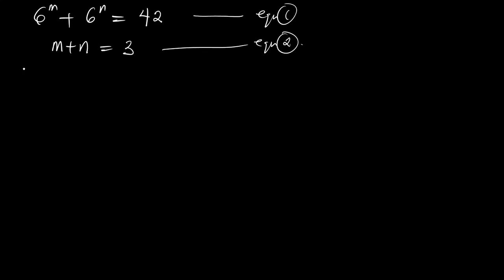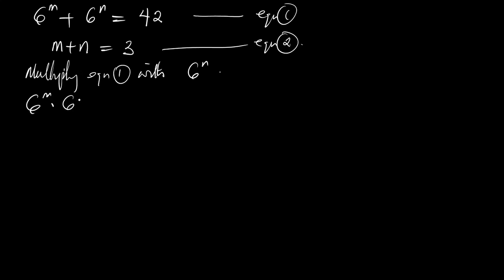What we're going to do is multiply equation 1 with 6 to the power n. So if we multiply all terms in equation 1 with 6 to the power n, we get the expanded form of the equation.